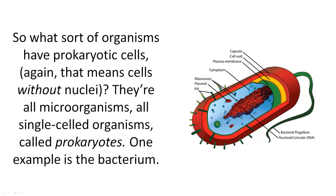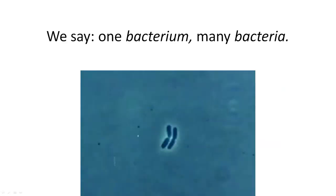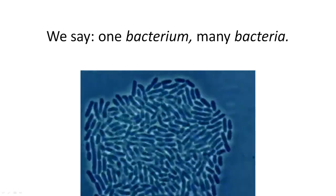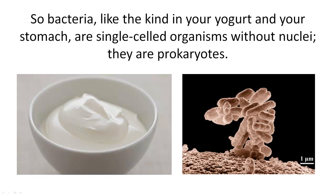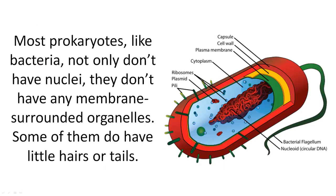So what sort of organisms have prokaryotic cells? That means cells without nuclei. They're all microorganisms, all single-celled organisms, called prokaryotes. One example is the bacterium. We say one bacterium, many bacteria. So bacteria, like the kind in your yogurt and your stomach, are single-celled organisms without nuclei — they are prokaryotes. Most prokaryotes, like bacteria, not only don't have nuclei, they don't have any membrane-surrounded organelles. Some of them do have little hairs or tails.